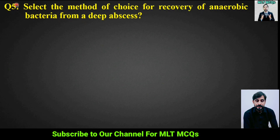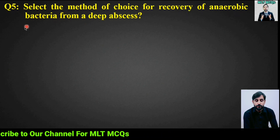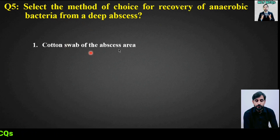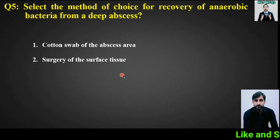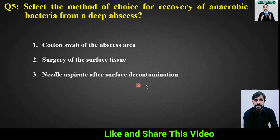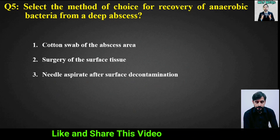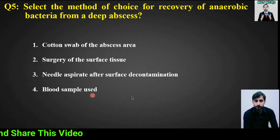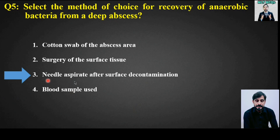MCQ number 5: Select the method of choice for recovery of anaerobic bacteria from a deep abscess. Options are: (1) cotton swab of the abscess area, (2) surgery of the surface tissue, (3) needle aspirate after surface decontamination, (4) blood sample. The right answer is option 3: needle aspirate after surface decontamination.